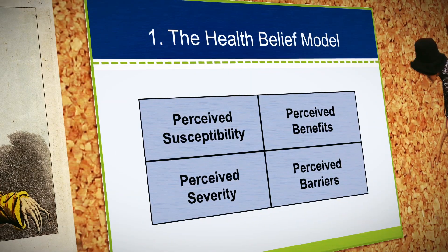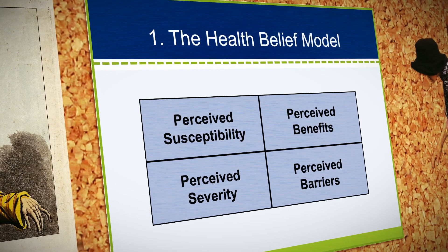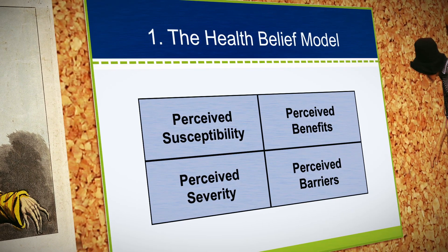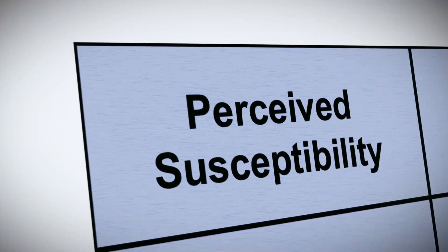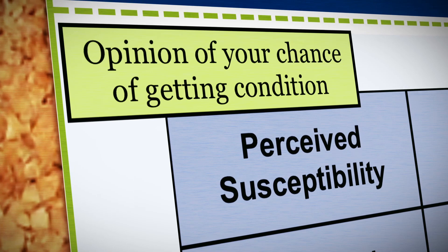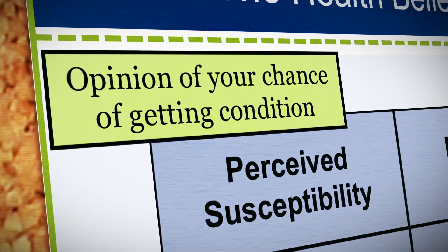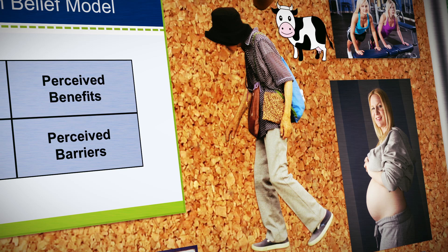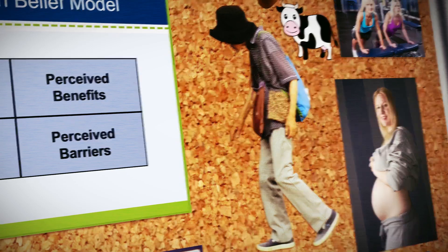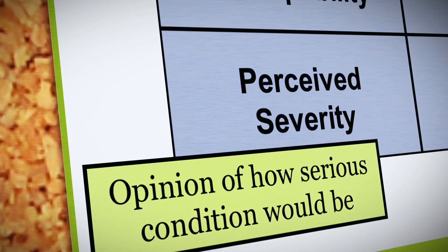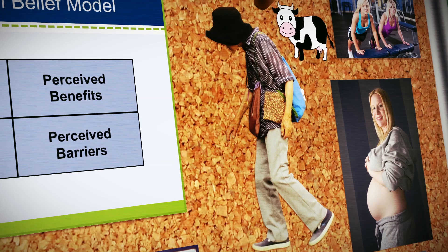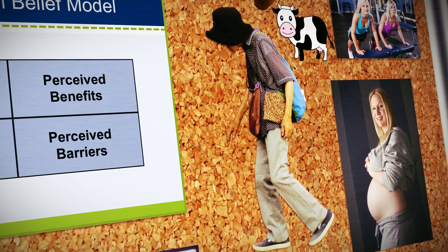Note the recurrence of the word 'perceived.' According to the health belief model, it's our perceptions of benefits and barriers associated with particular actions that determine our behavior — not the real benefits and behaviors. Perceived susceptibility refers to your opinion regarding your chance of getting a particular condition. How likely do you think it is that you will develop osteoporosis, for example? Perceived severity refers to your opinion of how serious the condition would be if you were to get it. If you were to get osteoporosis, do you think that would be a mild inconvenience or do you think it would be painful and debilitating?